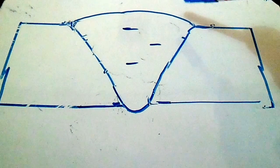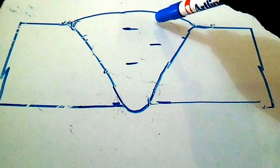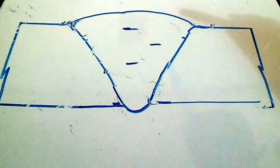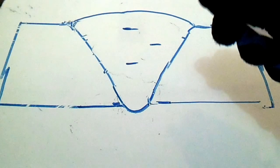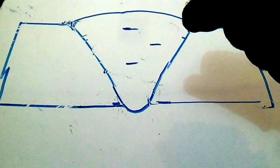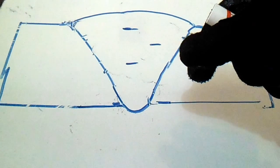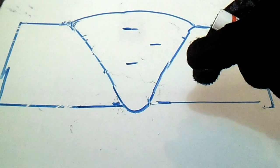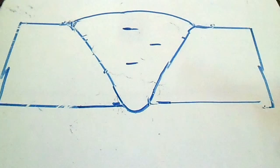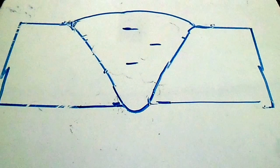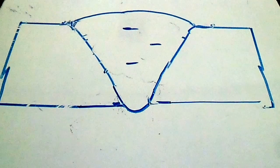The next defect is tungsten inclusion. This occurs during GTAW (Gas Tungsten Arc Welding), where tungsten from the electrode mixes into the weldment. This is also a weld defect.